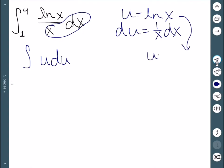Since u is equal to ln of x, our bounds would be ln of 1, which is 0, and ln of 4.